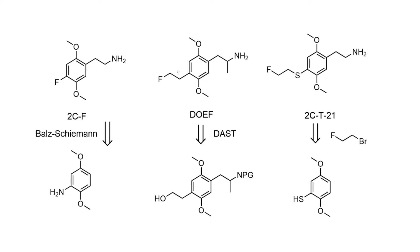There are a couple of fluorinated compounds that turn up in PiHKAL, but usually introduction of fluorine carries with it some synthetic challenges. These are some examples that Shulgin was able to make in PiHKAL. You can see here 2CF, that was made by the low-yielding and drastic Balz-Schiemann reaction from the corresponding aniline. DOEF was prepared by a deoxyfluorination of an alcohol using DAST, a deoxyfluorinating reagent based on sulfur tetrafluoride. And in the case of 2CT21, Shulgin buys in the fluoride as part of his starting material and does the alkylation with bromofluoroethane.